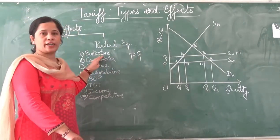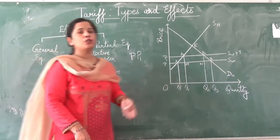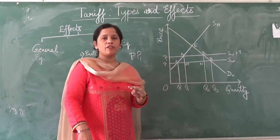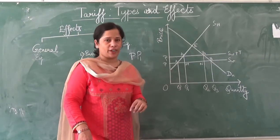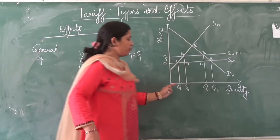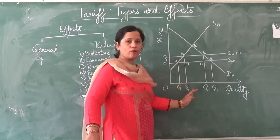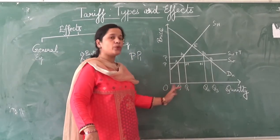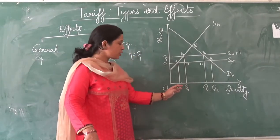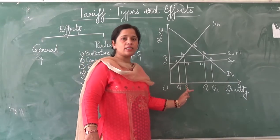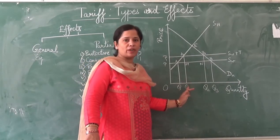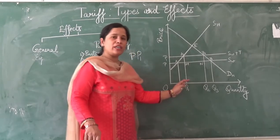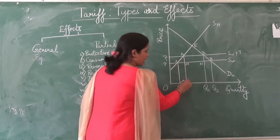The first effect is the protective effect. With the imposition of a tariff, domestic industries get protected and this is known as the protective effect. We can see that domestic supply increases from OQ to OQ1. This QQ1 increase in domestic supply is known as the protective effect of a tariff.